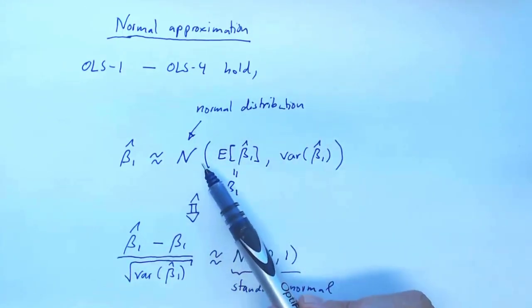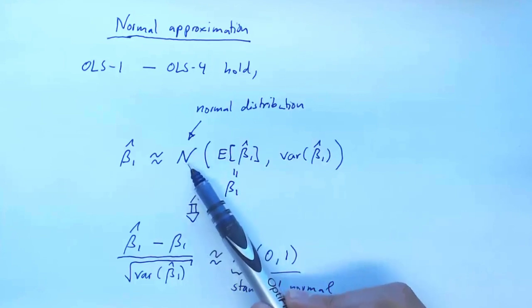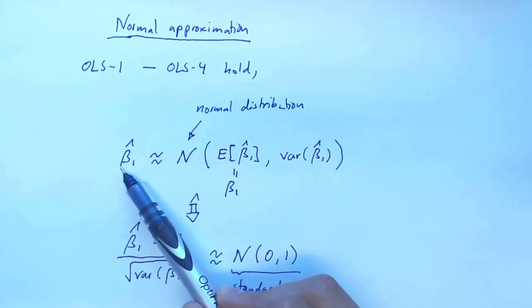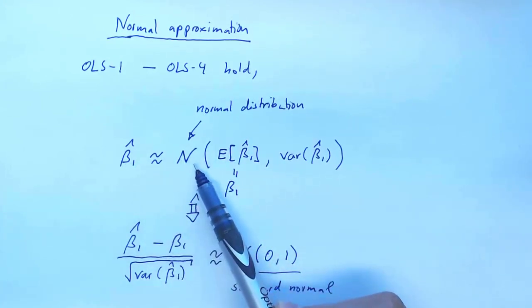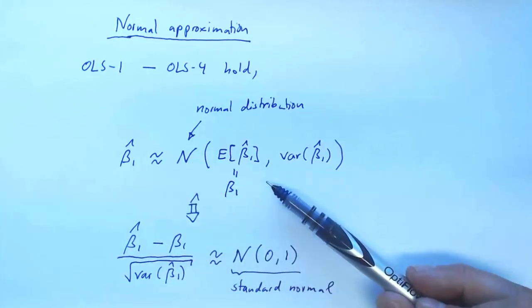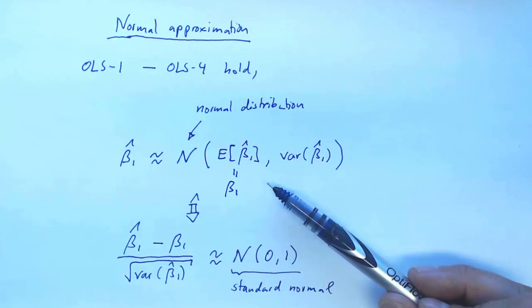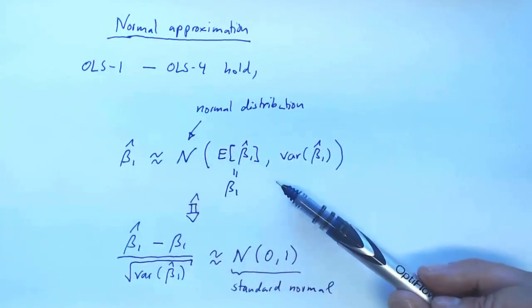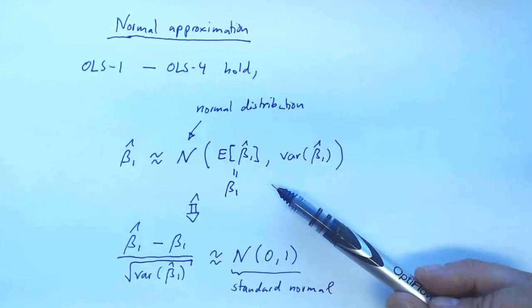This distribution approximation is just that — an approximation. The left-hand side and right-hand side are not exactly equal. The approximation is justified for large samples: if the sample size n is large, then this will almost be an equality.